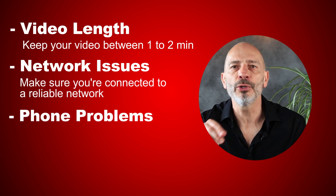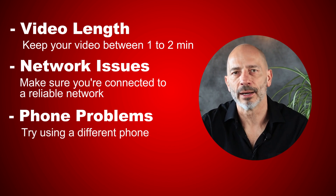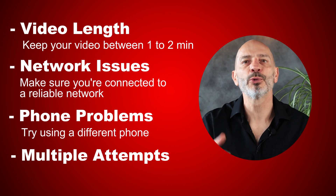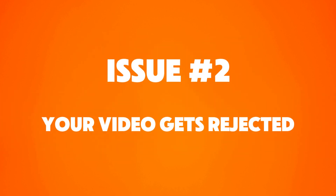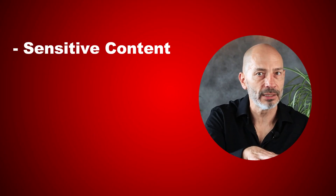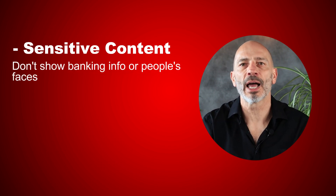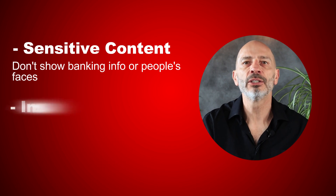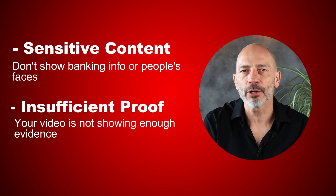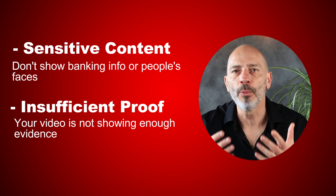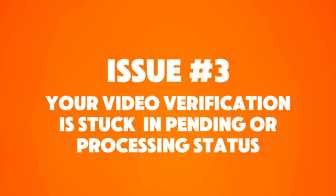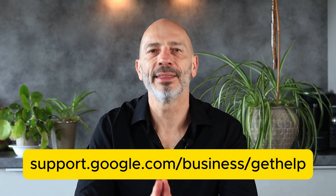Multiple attempts: sometimes you might need to upload your video multiple times before it works — be patient and try again. Issue number 2 — your video gets rejected. This usually happens because of sensitive content: your video might show something sensitive like banking info or a person's face. Or insufficient proof: your video might not show enough clear proof. To fix this, make a new video and ensure it meets all the requirements; add more proof and examples if needed. Issue number 3 — your video verification is stuck in pending or processing status. If this happens, there's not much you can do except contact Google support at this address.